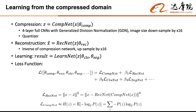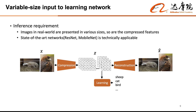The loss function is designed according to the learning task — for example, mean squared error for reconstruction and cross entropy for image classification. There is one catch: sometimes the learning network requires a fixed size output, but the compressed features have variable sizes. We note that adaptive pooling in the learning network can help to normalize the tensor size.